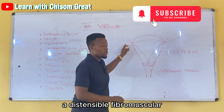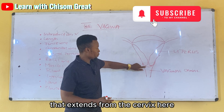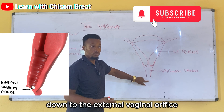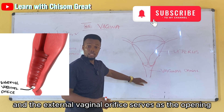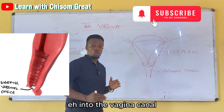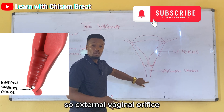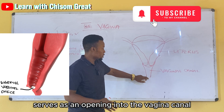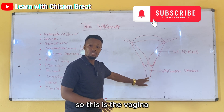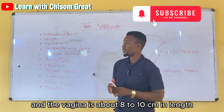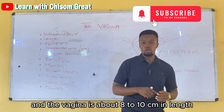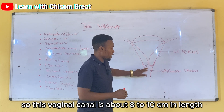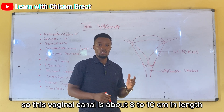It is a distensible fibromuscular tube that extends from the cervix down to the external vaginal orifice. The external vaginal orifice serves as the opening into the vaginal canal. This vaginal canal is about 8 to 10 cm in length.